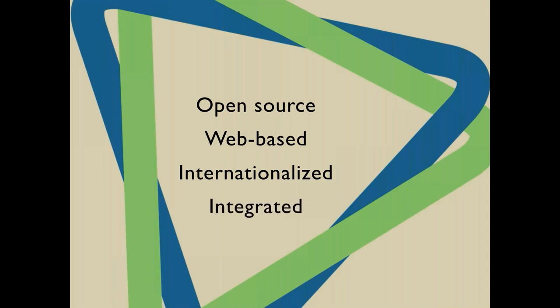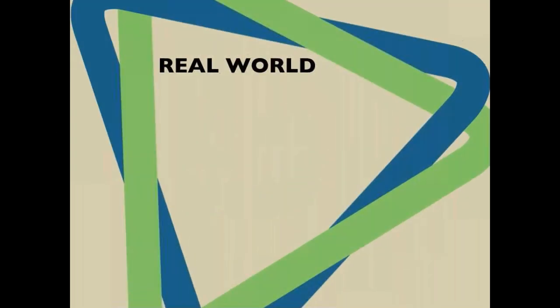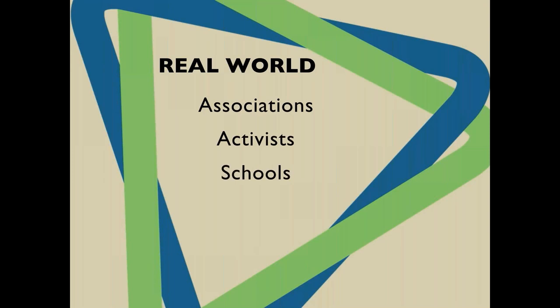CiviCRM integrates directly into your website. The three main open-source content management systems — Drupal, WordPress, and Joomla — are the primary ones it works with. In the real world we see associations, advocacy groups, schools and universities, and even some small businesses — whether for-profit or nonprofit organizations — using this type of system.